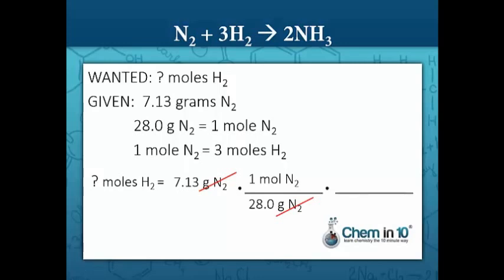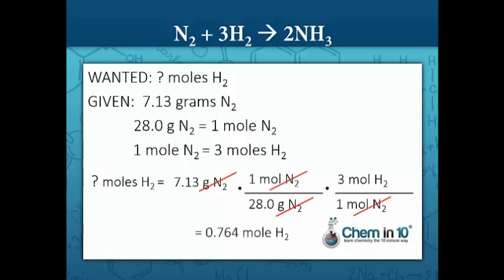Now that we have moles of nitrogen, we need to convert that to moles of hydrogen. We know that one mole of nitrogen reacts with three moles of hydrogen — that's our conversion factor. We put one mole of nitrogen in the denominator to cancel out moles of nitrogen in the numerator, which is equal to three moles of hydrogen. The moles of nitrogen cancel out, and we multiply the numerators and divide by the denominators to get 0.764 moles of hydrogen.